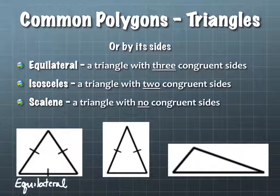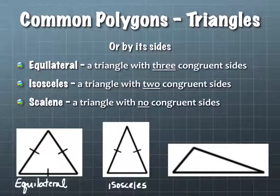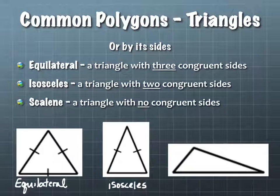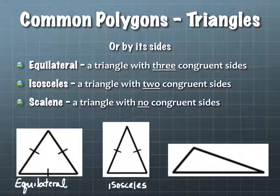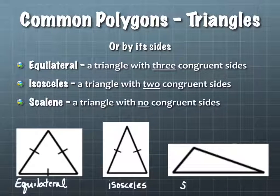The second shape is isosceles. The third side isn't marked at all, and visually we can be pretty sure it's not the same length — because it's not marked, we assume it's not equal, so it would not be equilateral. The last one doesn't have any side lengths marked the same, so it's scalene.